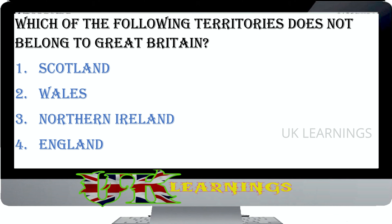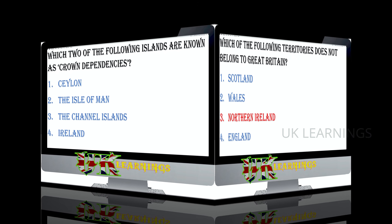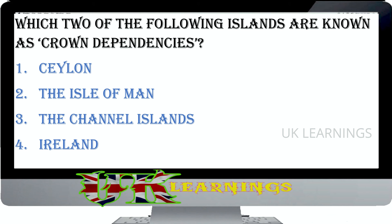Which of the following territories does not belong to Great Britain? Scotland, Wales, Northern Ireland, England. The correct answer is Northern Ireland. Great Britain refers only to England, Scotland and Wales, not to Northern Ireland.